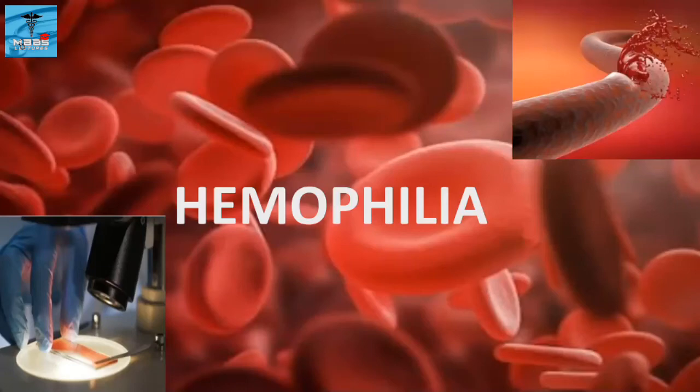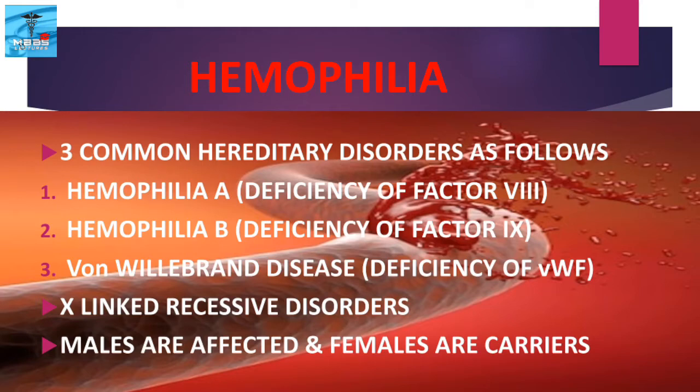This video is about hereditary coagulation disorders which include Haemophilia A, Haemophilia B, and Von Willebrand disease. The three common hereditary disorders are Haemophilia A, which is due to deficiency of factor 8, then Haemophilia B, which is due to deficiency of factor 9, and Von Willebrand disease, which is due to deficiency of Von Willebrand factor.